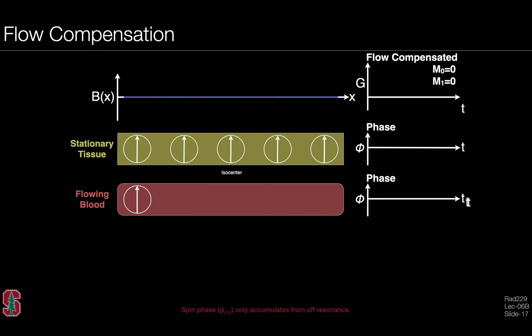A flow compensated gradient waveform is one for which the first moment M1 is equal to zero. We have also chosen to use a gradient that has no net zeroth moment either. This ends up being a very typical gradient waveform that gets used in MR sequences a lot, as we'll see in just a second.